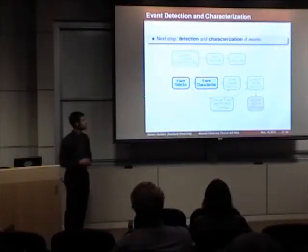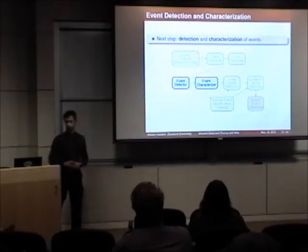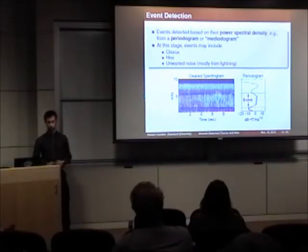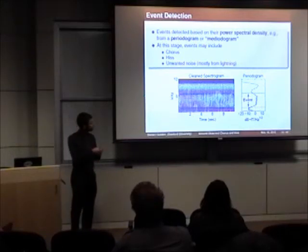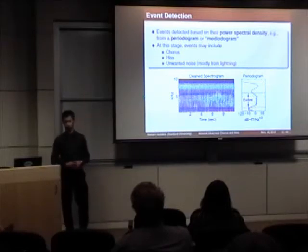The next step is the detection and characterization of events. Events are detected based on their power spectral density, such as from a periodogram, which can be thought of as the average over time of a signal spectrogram, which would have units of power spectral density — in this example, decibels with respect to 1 pT per root hertz.